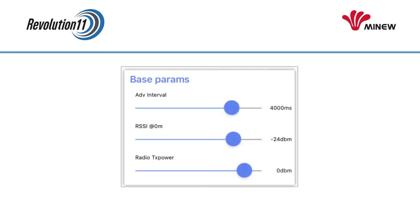Each of the slots has three configurable slider bars. The Advertising Interval is the frequency at which the Bluetooth signal from this slot will be broadcast. The RSSI measurement is a measurement of power used to calculate relative distance. And Radio TX power is the strength of the signal this slot will be transmitting. You can adjust these sliders as you work with apps and gateways that pick up these signals to optimize the usefulness of these beacons.